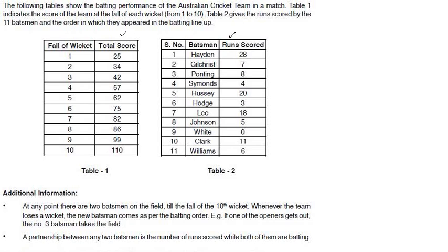Some additional information is also known. At any point, there are 2 batsmen on the field till the fall of the 10th wicket. Whenever the team loses a wicket, the new batsman comes as per the batting order. For example, if one of the openers gets out, then the number 3 batsman takes the field. The partnership between any 2 batsmen is the number of runs scored while both of them are batting.